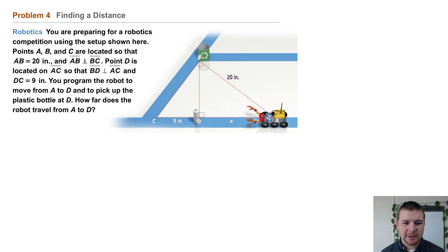You're preparing for a robotics competition using the setup shown here. Points A, B, and C are located so that AB equals 20 inches and segment AB is perpendicular to segment BC. Point D is located on segment AC so that segment BD is perpendicular to segment AC and DC equals 9 inches.